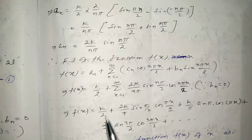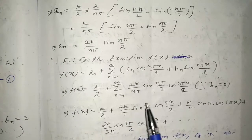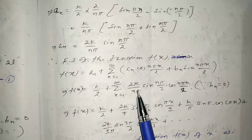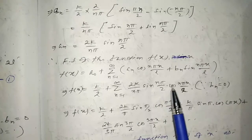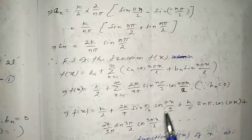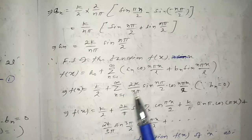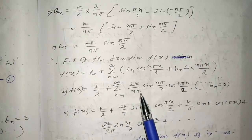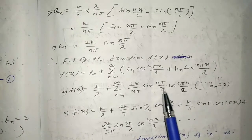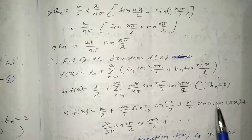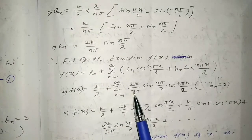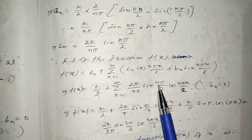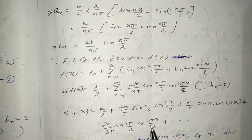Expanding term by term: for n=1, (2k/π)·sin(π/2)·cos(πx/2); for n=2, (2k/2π)·sin(π)·cos(πx) = (k/π)·sin(π)·cos(πx); for n=3, (2k/3π)·sin(3π/2)·cos(3πx/2), and so on to infinity.